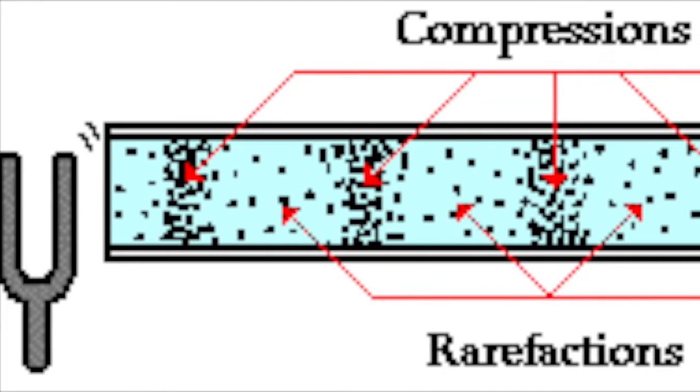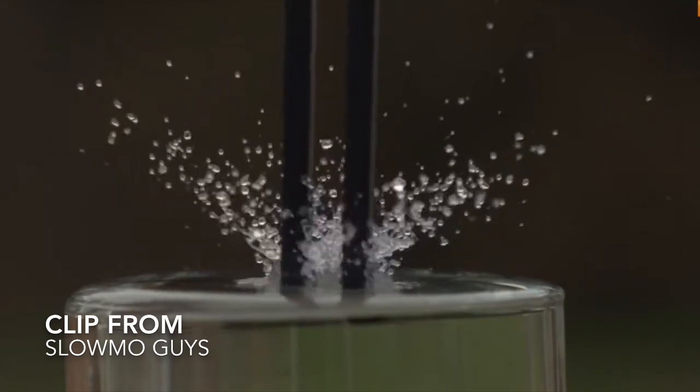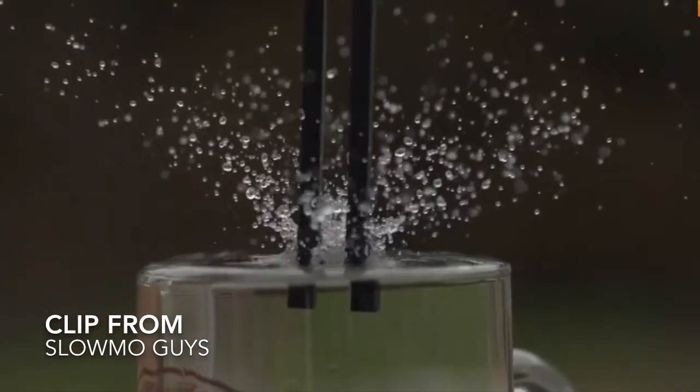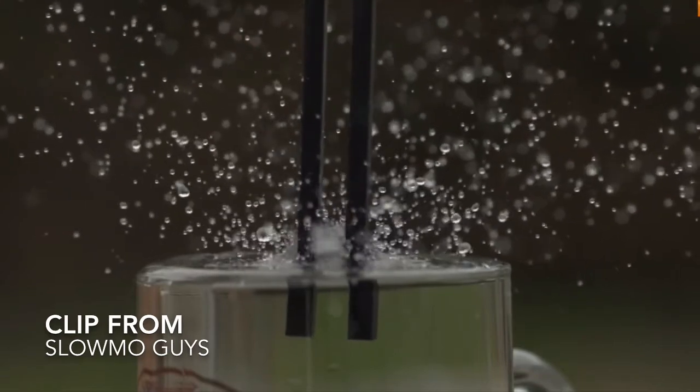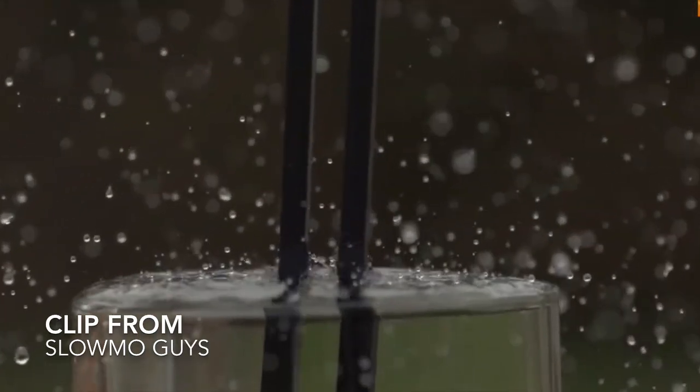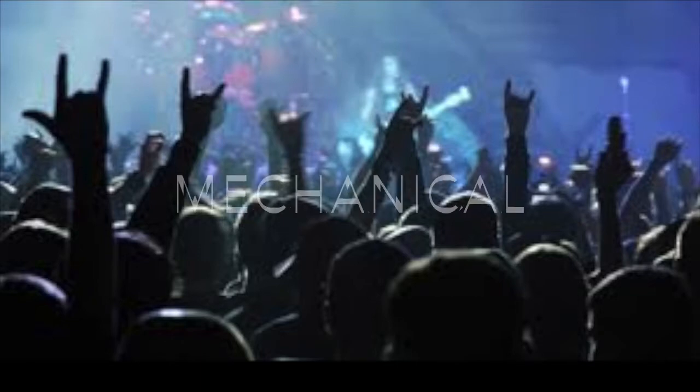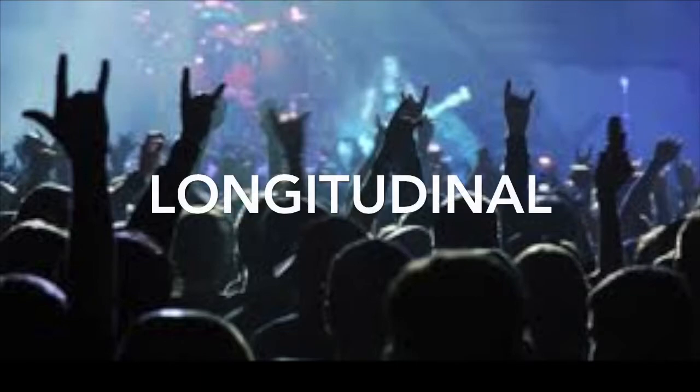The last type of wave is a pressure wave. These waves consist of a repeating pattern of high pressure and low pressure regions moving through medium. So to wrap it all up, there are three types of waves: mechanical, longitudinal, and pressure.